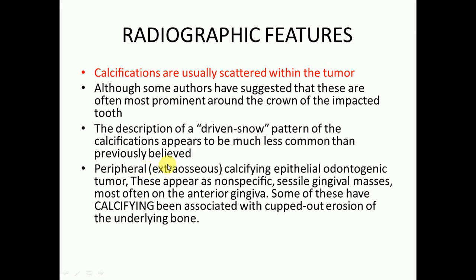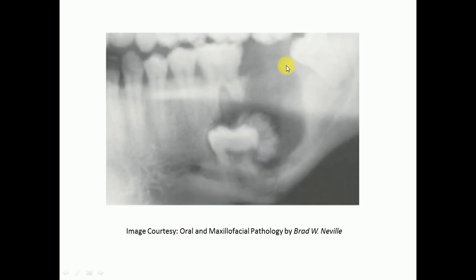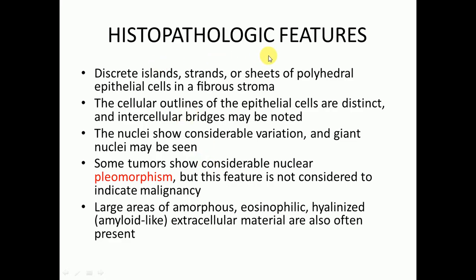There is a peripheral or extra-osseous variant of Calcifying Epithelial Odontogenic Tumor. These appear as non-specific sessile gingival masses — the base of the gingival mass will be broad. Sessile means the base is broader, as opposed to pedunculated which has a stalk. These sessile gingival masses are most often on the anterior gingiva. Some have calcification associated with cupped-out erosion of the underlying bone. Here you can see the radiolucent area present on the mandibular second molar, with calcification closely associated with it.